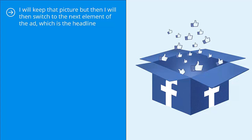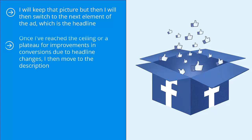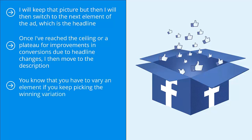Switch to the headline and keep varying it to see if you can improve the conversion rate of that ad. Once you've reached the ceiling for improvements due to headline changes, move to the description. You know you need to vary an element by continuing to pick the winning variation with small tests, until the whole ad is optimized.